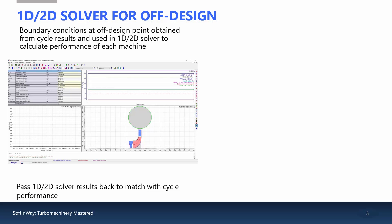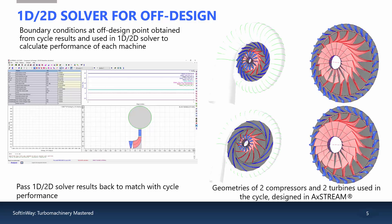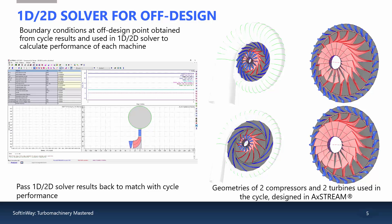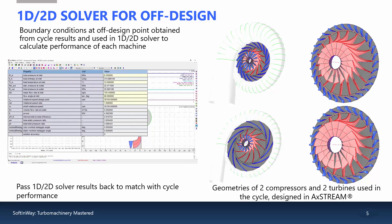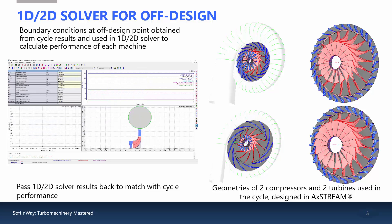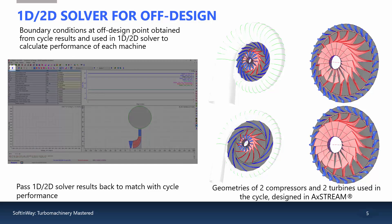Here is what our four turbo machines look like. On the right, we have the preliminary geometry created in AxeStream of the two compressors and the two turbines. The off-design analyses at the component level are based on these designs. The AxeStream 1D and 2D solver can take any set of boundary conditions and run detailed analysis of the geometry of interest. These boundary conditions can be input manually or can be automatically populated like they are here.